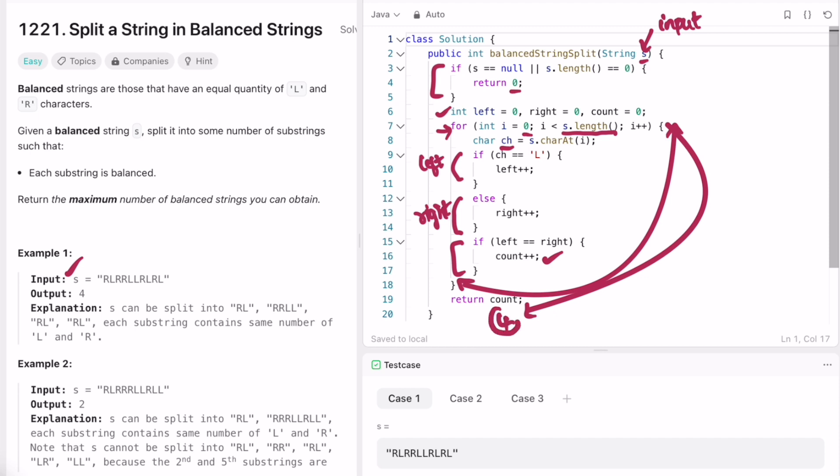So the time complexity of this approach is O of n, where n is the length of the string s. And the space complexity is O of 1 because we are not using any extra space to solve this question. That's it guys, thank you for watching, and I'll see you in the next video.